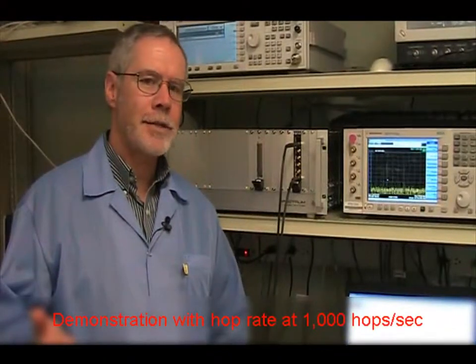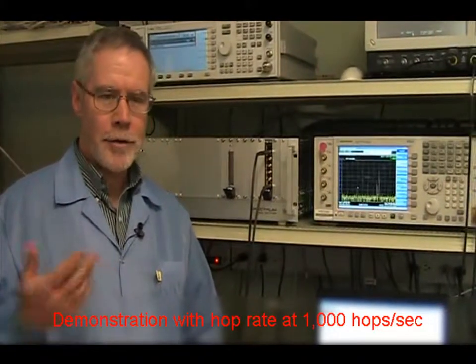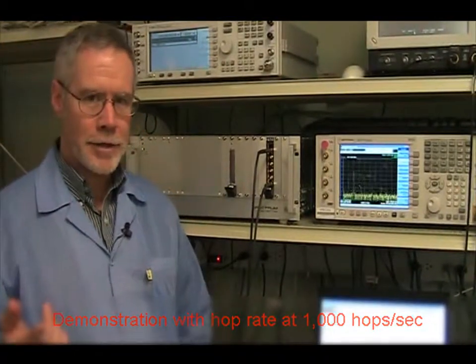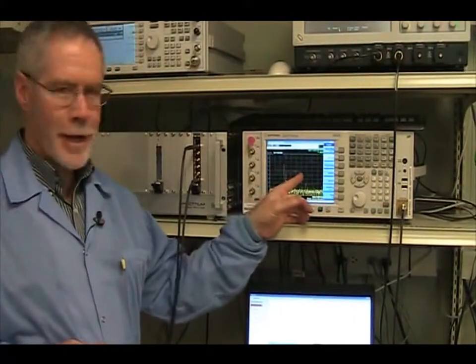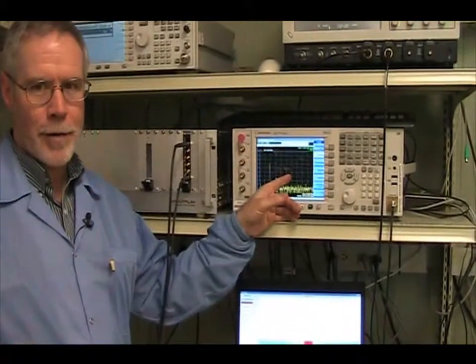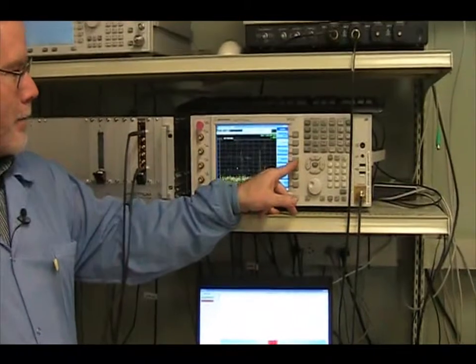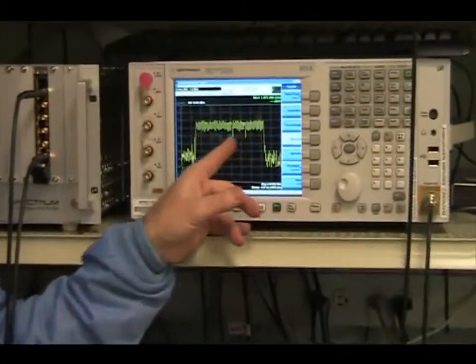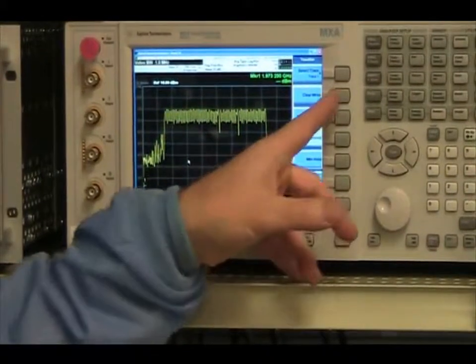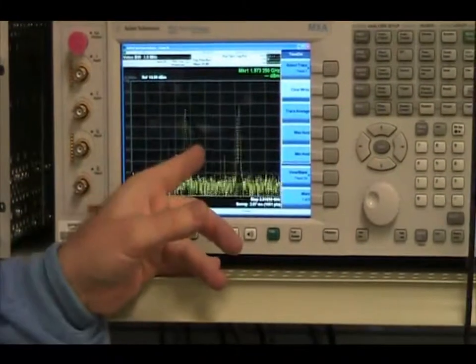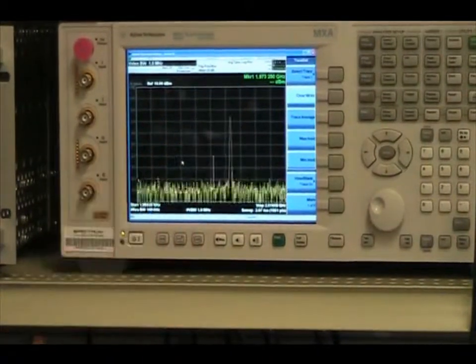Now we're running the same example, except we've increased the hop rate from 10 hops per second to 1,000 hops per second. It's still hopping sequentially, but if you look at it on the spectrum analyzer, it looks pretty random because the spectrum analyzer can't keep up with 1,000 hops per second. If I press the max hold button, you can see it's actually seeing all the signals coming together to form that band.